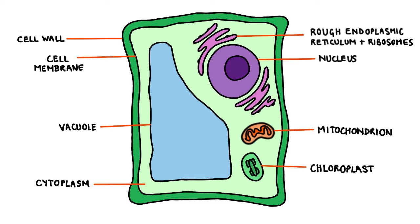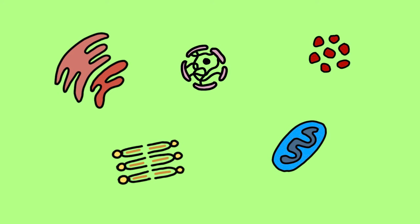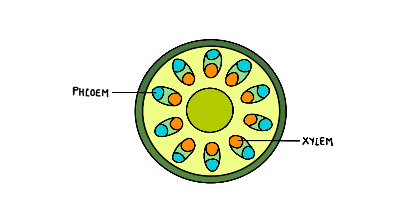It is important for every cell to produce proteins. An organelle used to do this is the rough endoplasmic reticulum with ribosomes attached. Plant cells also have a large vacuole in the cytoplasm, which is used to store nutrients and food in the form of cell sap. There are many different types of plant cells, each of which differ in their own way, such as xylem and phloem cells, which are used in plant transport.